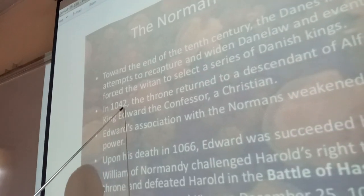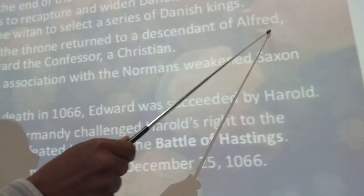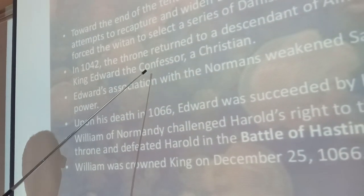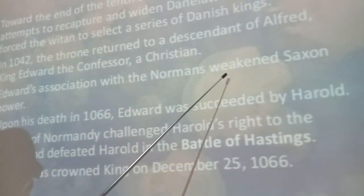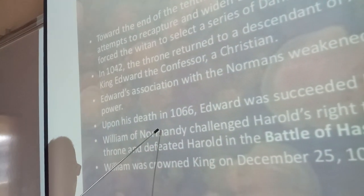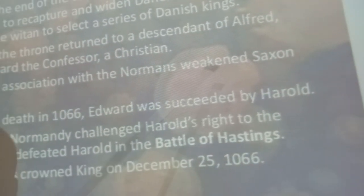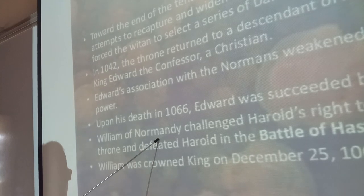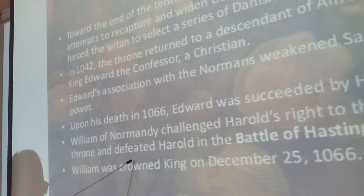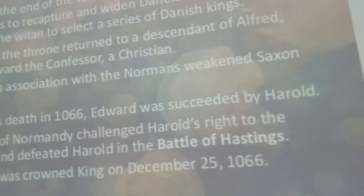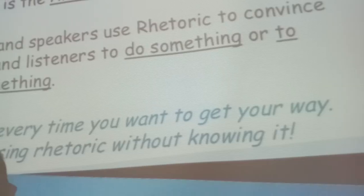The Norman Conquest: towards the end of the 10th century, the Danes increased their attempts to recapture England and eventually forced the Witan to select a series of Danish kings. In 1042 the throne returned to a descendant of Alfred — King Edward the Confessor, a Christian. Edward's association with the Normans weakened Saxon power. Upon his death in 1066, Edward was succeeded by Harold. William of Normandy challenged Harold's right to the throne and defeated Harold in the Battle of Hastings. William was crowned king on December 25, 1066.